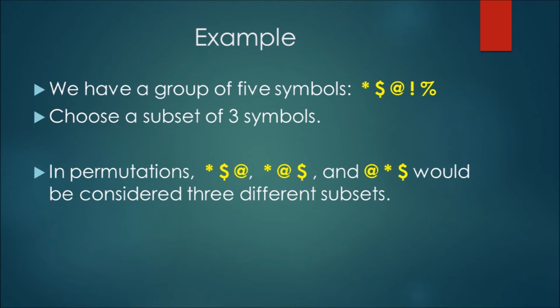For permutations, because we are taking order into account, the three subsets - asterisk dollar sign at, dollar sign at asterisk, at dollar sign asterisk - would be considered three different subsets.